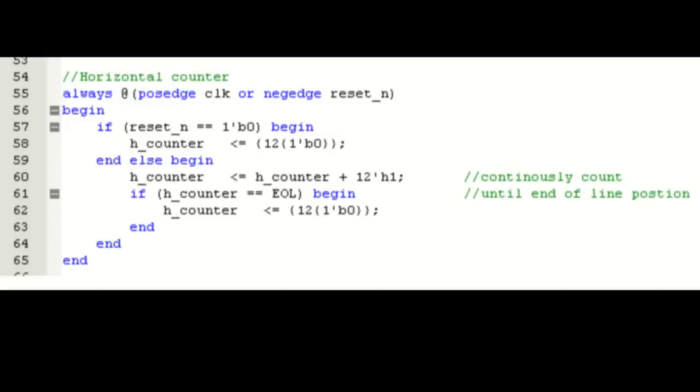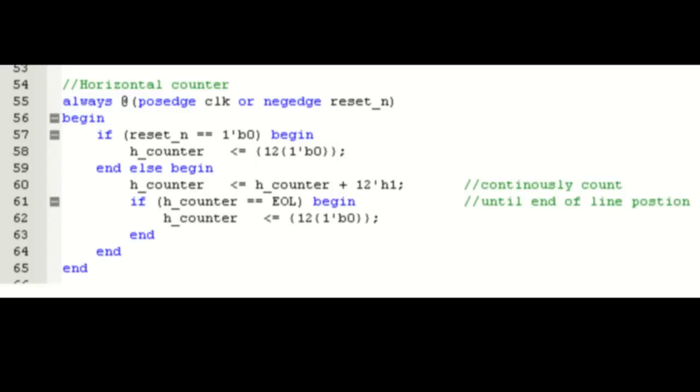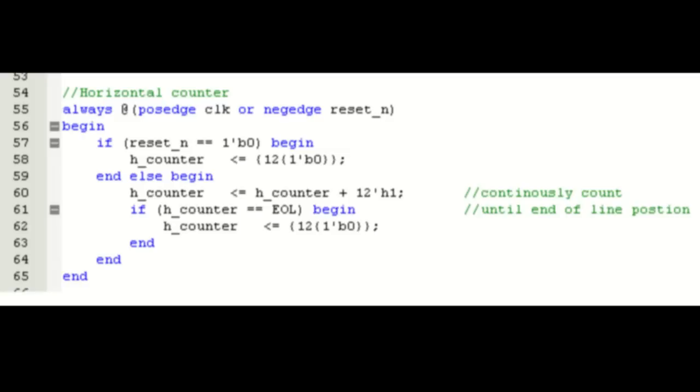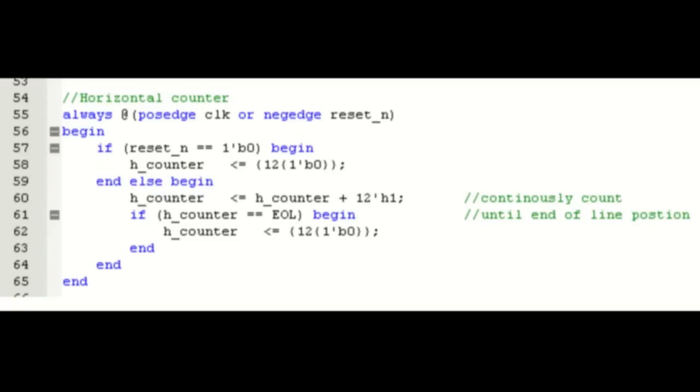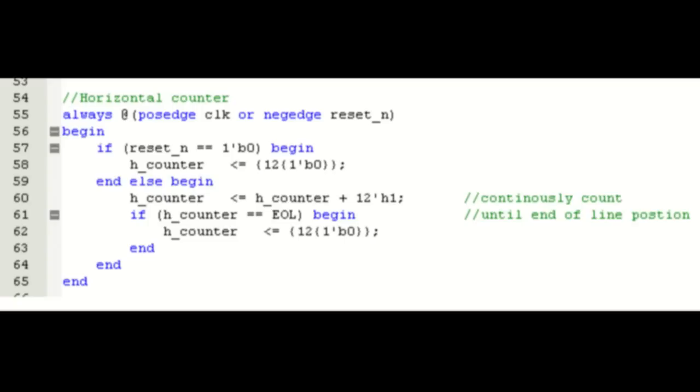Since everything's evaluated simultaneously in hardware, anything that's lower on the page will override anything that's higher on the page. For instance, the horizontal counter will not index if the condition of hCounter equals EOL. It will get cleared and will never index. This is very powerful because you can make as much parallel hardware as you want as long as it fits within your device, and it all runs simultaneously.